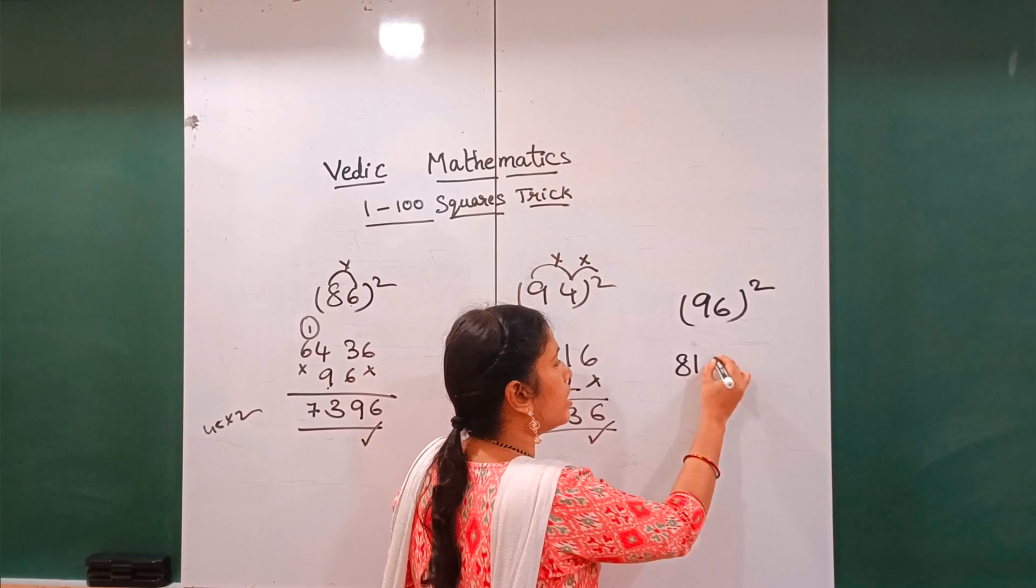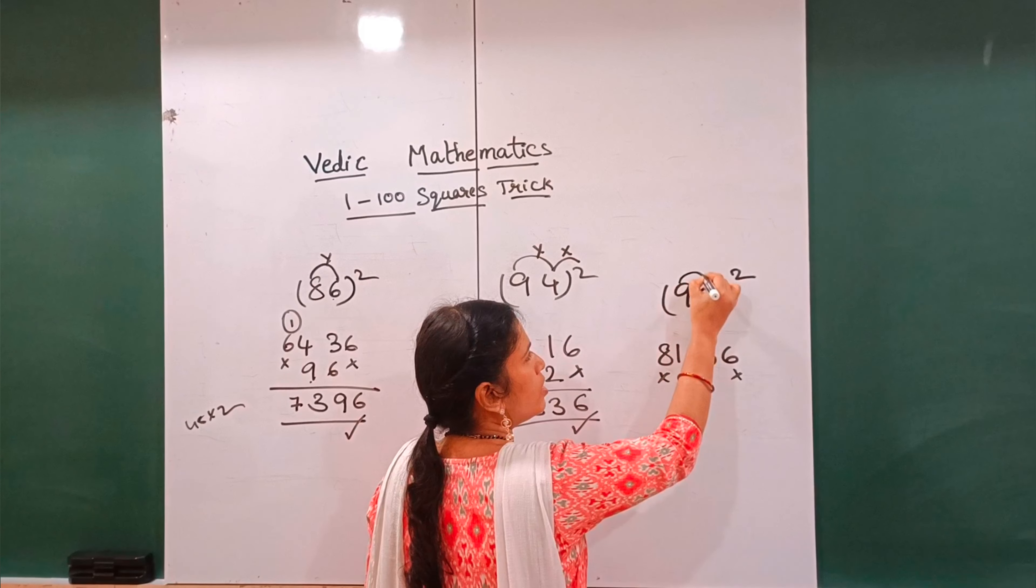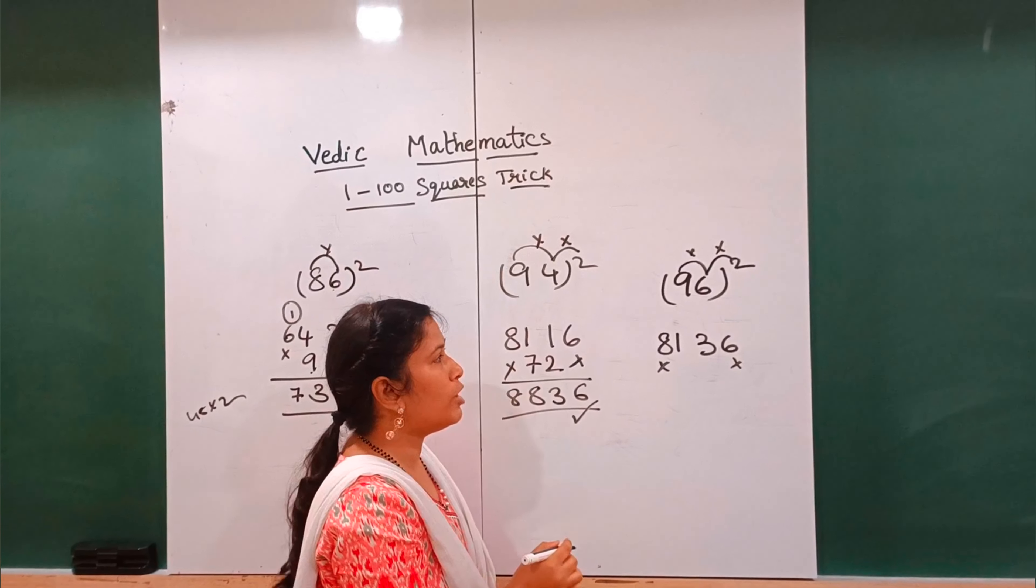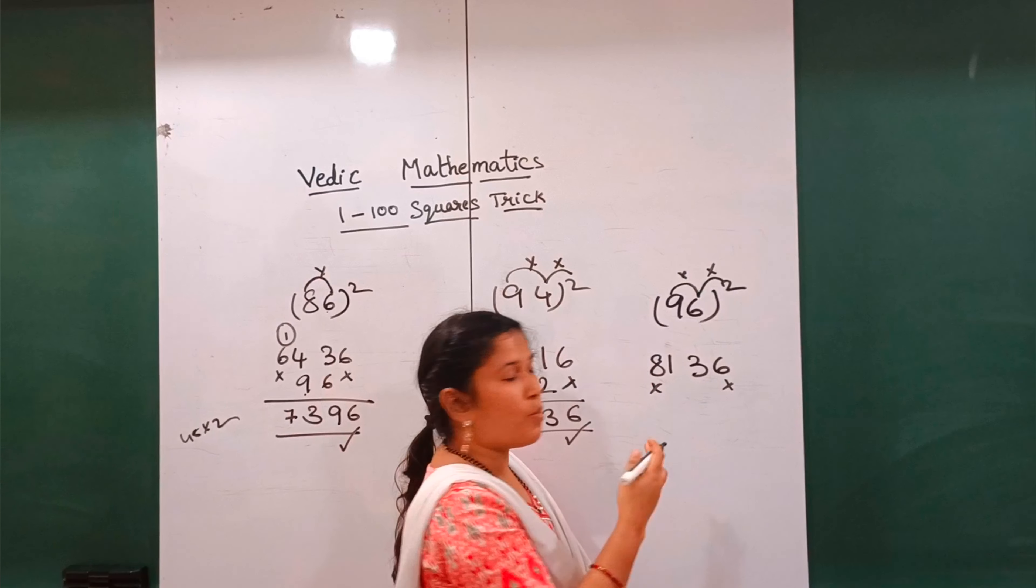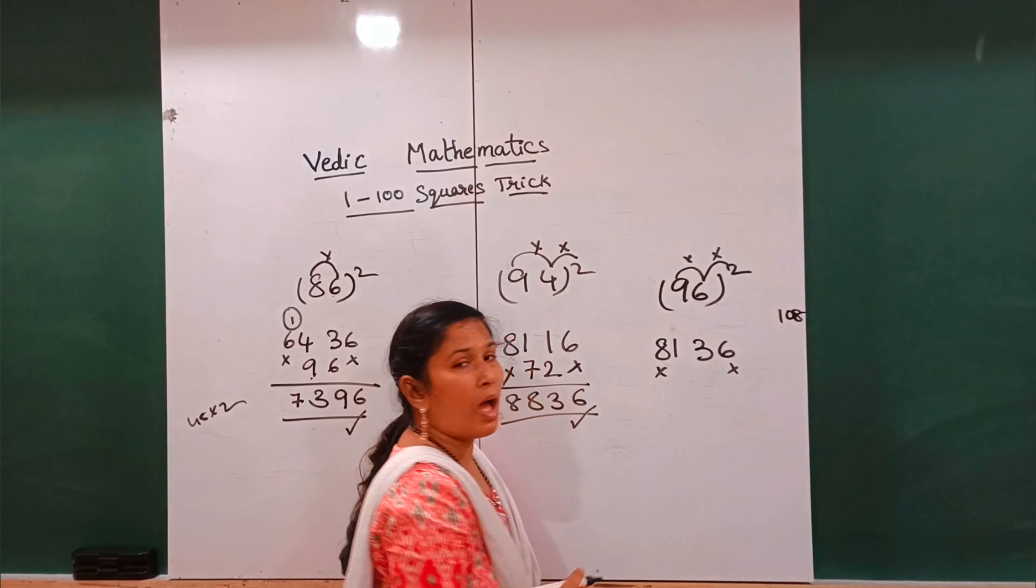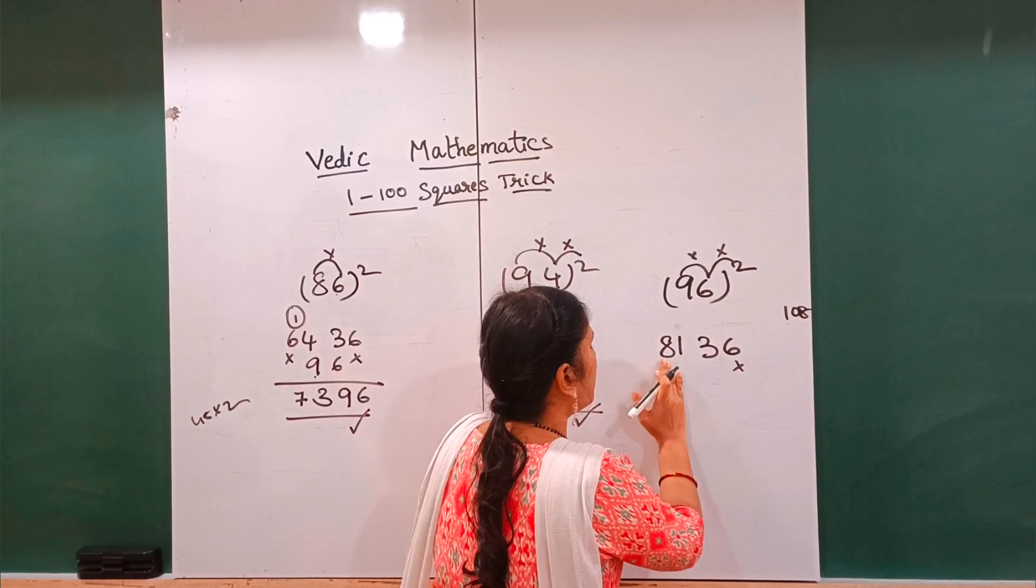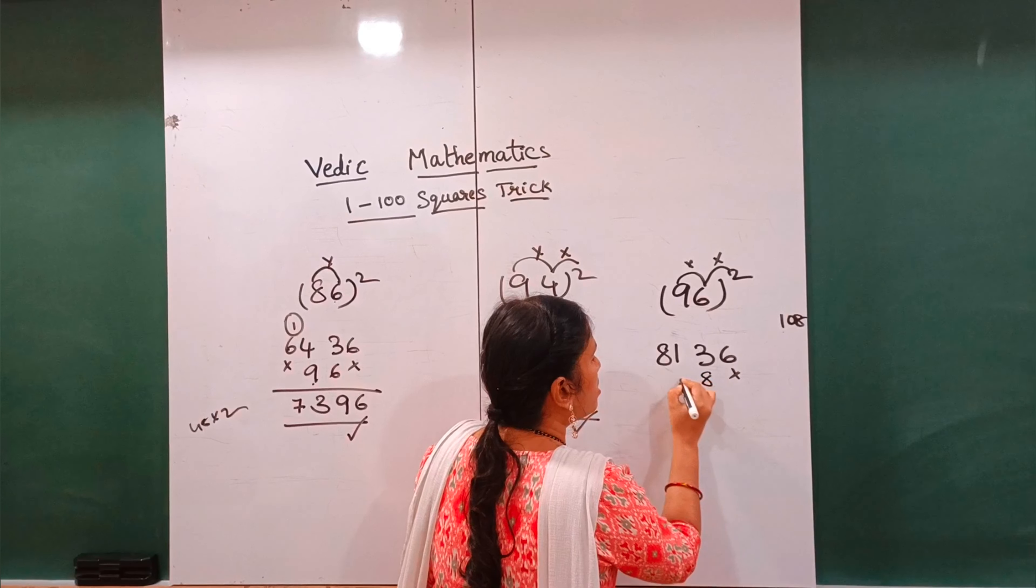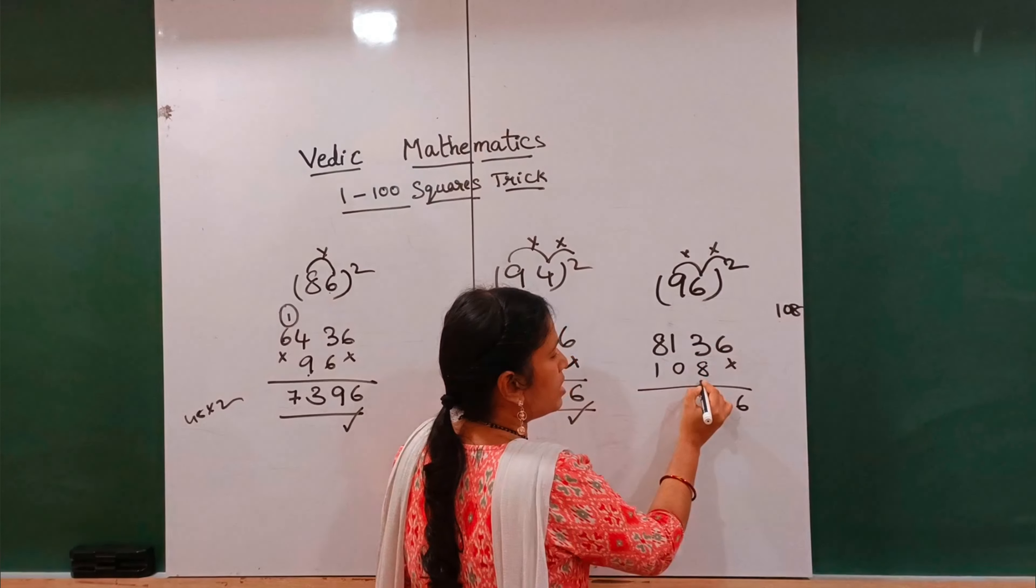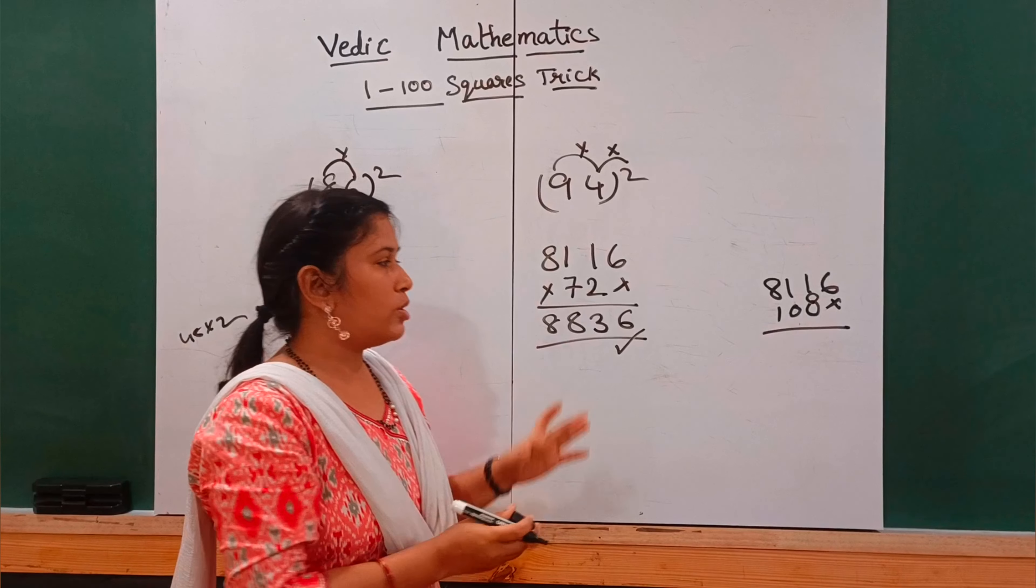Let me recalculate. 9 times 4 into 2, 9 sixes are 54, 54 into 2 is 108. So it is 108. 1 and 8. If you add them, it is 8, then 0, then 1, and 6. 8 plus 3 is 11, 1 carry. This trick is used for 1 to 100 squares.